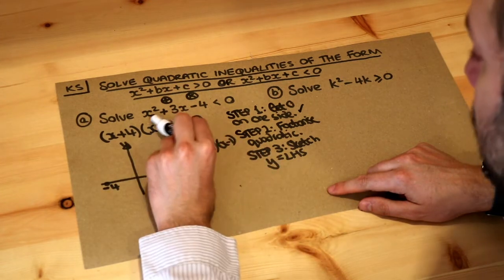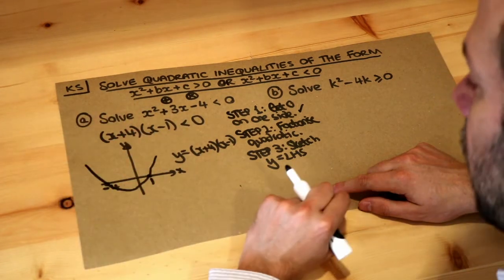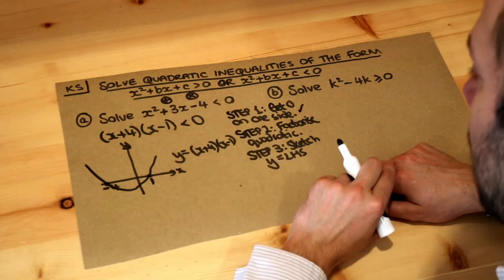And then because it's a positive quadratic, it's a positive x squared term, it's going to be a smiley face shape. We don't care about the y-intercept for the purposes of solving the quadratic inequality.